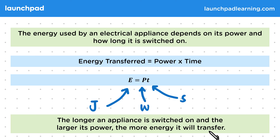The higher the power rating of a device, the more energy it will transfer. We want appliances to be as efficient as possible, and it's really important to switch off appliances when we're not using them to reduce the energy used. This saves money and is better for the environment.